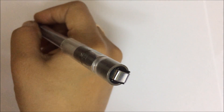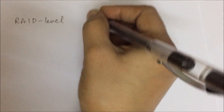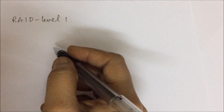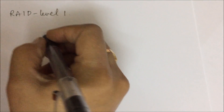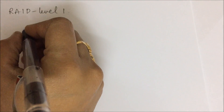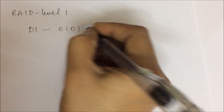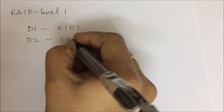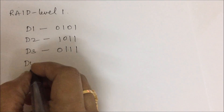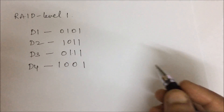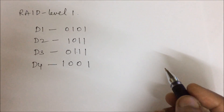First we will see how the data recovery takes place in RAID level 1. In RAID level 1 the redundant data is going to be duplicated completely. Let us consider the example of 4-bit data: D1 is 0101, D2 is 1011, D3 is 0111, D4 is 1001. This is the example we will be considering for all the RAID levels data recovery.